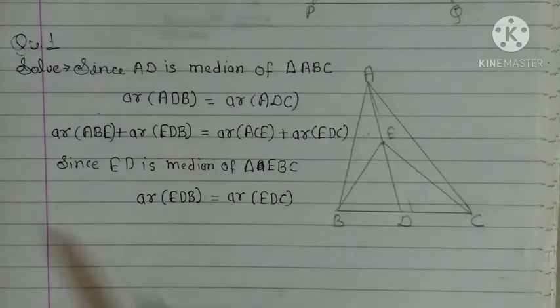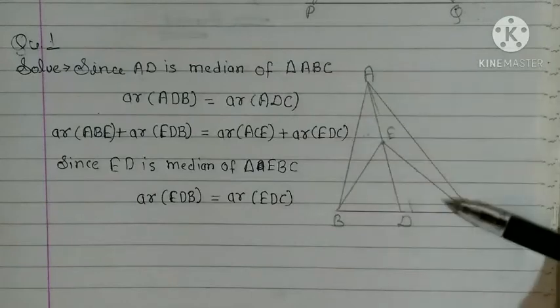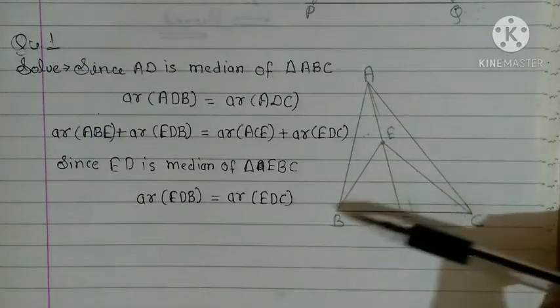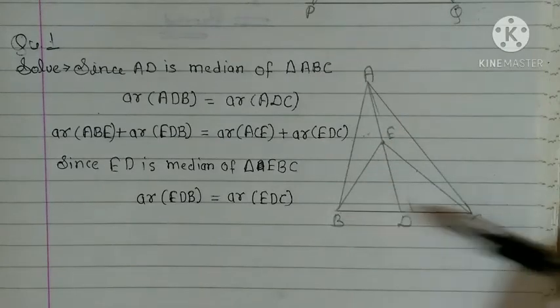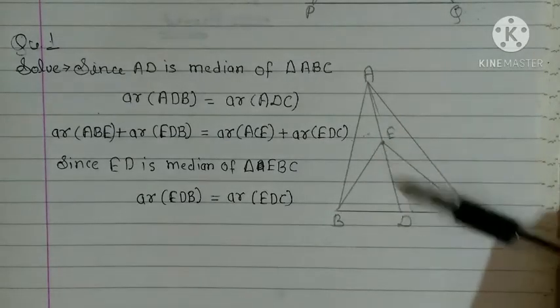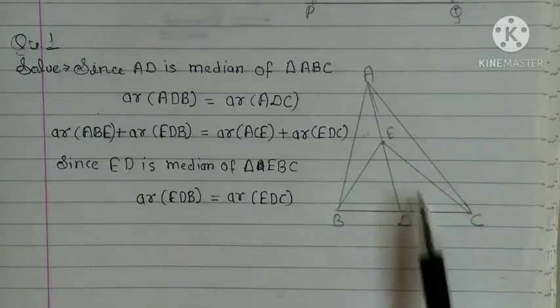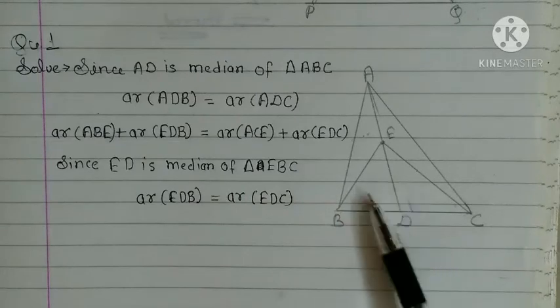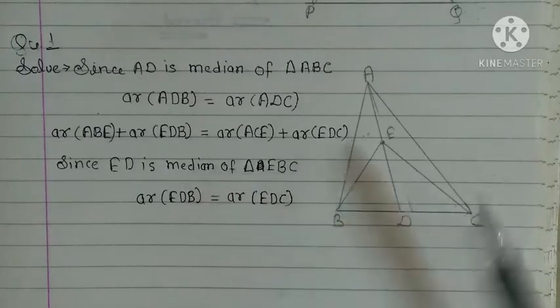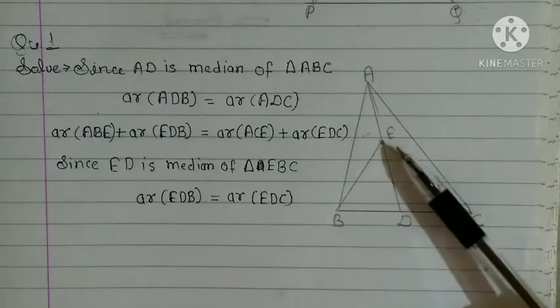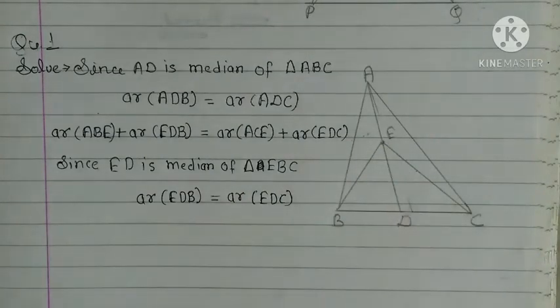Ab dhekhen, ab yeh toh bade triangle ki baat hore, ab is chote triangle ki baat kare hai, EBC. Yeh haan bhi dhekhen, ED joh hai, wu median ka kama kare raha hai. Yeh dhoanong joh triangle hai, wu equal hongi, in dhoanong triangles ka area bhi equal hoga. Area of EDB equal area of EDC.